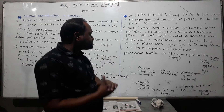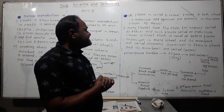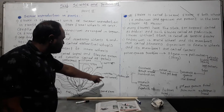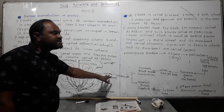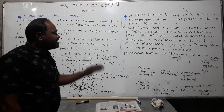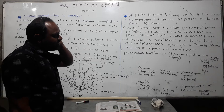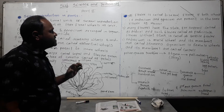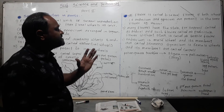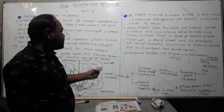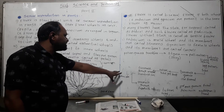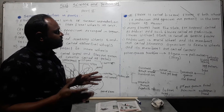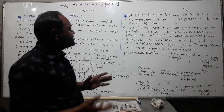The member of androecium is called a stamen, and the member of gynoecium is called a carpel. So androecium is made up of stamens (male floral members) and gynoecium is made up of carpels (female floral members).